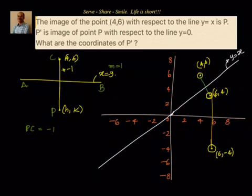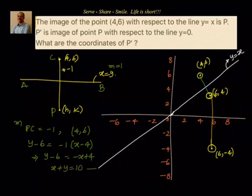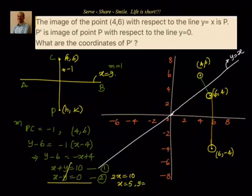We know the slope of PC is minus 1 because the slope of line y equals to x is 1. Also, the perpendicular passes through point 4 comma 6. So using point-slope form, y minus y1 equals m times x minus x1, we get y minus 6 equals minus 1 times x minus 4, which simplifies to x plus y equals to 10. Another equation we have is x minus y equals to 0 (the line y equals to x). Now we solve these two equations. Adding them, y cancels and we get 2x equals to 10.